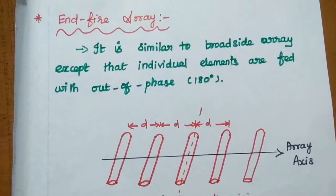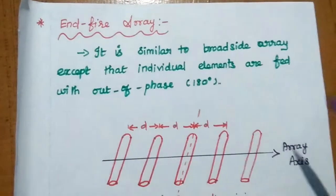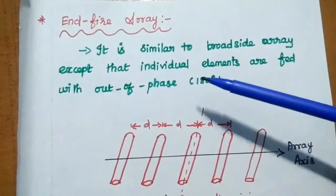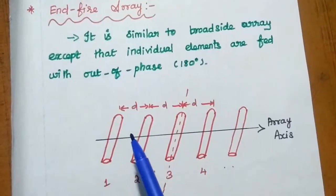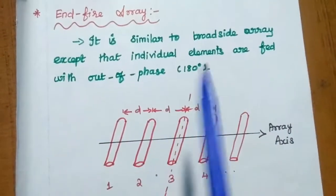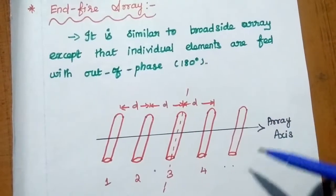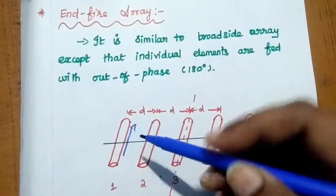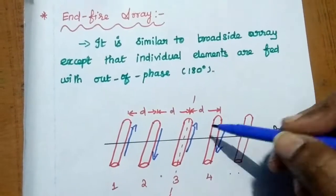The next one is endfire array. It is similar to broadside array except that individual elements are fed out-of-phase — that is 180 degrees out of phase. That is the only difference between broadside array and endfire array. To achieve this out-of-phase condition, one element faces one direction and the next element faces the opposite direction, achieving 180 degrees out-of-phase with each other.